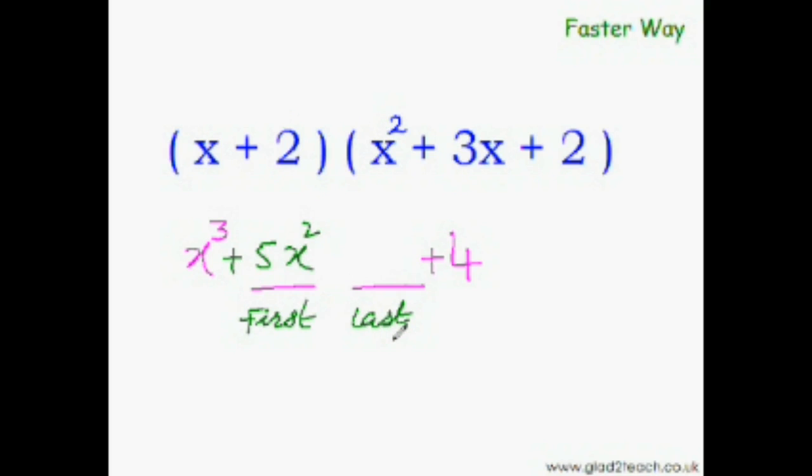Now as you must have guessed, to get the last term we would be doing the rainbow multiplication on the last two terms of these expressions. This is 2x plus 6x, which is 8x. Question solved.